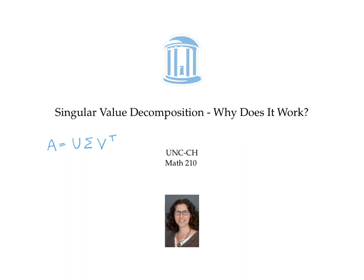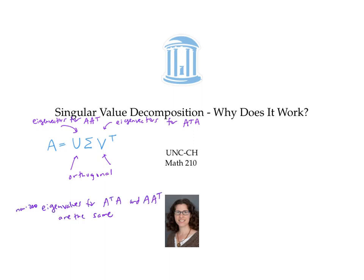This video squared away a lot of the details about singular value decompositions. The matrices U and V that we built really are orthogonal, and when we multiply U times sigma times V transpose, we really do get back A. In addition, U and V are not so different from each other: V is built with eigenvectors for A transpose A, and U is built with eigenvectors for AA transpose. The nonzero eigenvalues for AA transpose and A transpose A are the same, so either one can be used to build the diagonal matrix sigma after taking square roots.